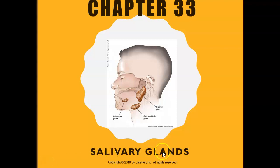We're going to look at the salivary glands. Salivary glands are glands in our head and neck area that form saliva. The reason why we have saliva in our mouth is because we have glands that make saliva, and then the saliva travels through a duct and gets pulled into our mouth. Let's look at the different types of salivary glands and what saliva does for us.